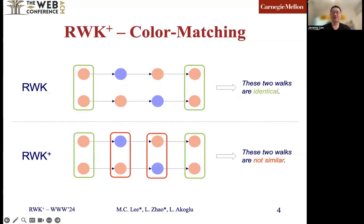The biggest flaw of RWK originally developed in RWNN is that it only enforces the same label at the start and the end of two walks while ignoring the intermediates. To solve this, we reformulate the equation to take the intermediates into consideration and propose an efficient computation to significantly reduce the memory and computational overhead.